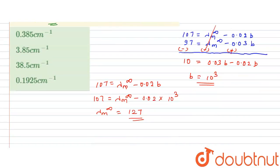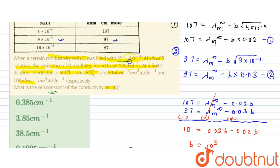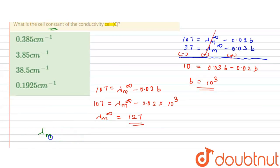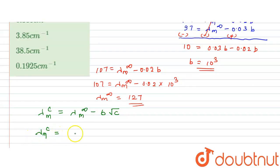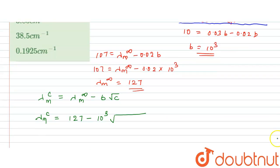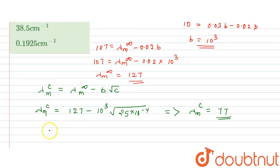Next, we calculate the cell constant. The cell was filled with 25×10⁻⁴ molar NaCl. Using λ_c = λ∞ − b√c: λ_c = 127 − 1000 × root(25×10⁻⁴). Root(25×10⁻⁴) = 0.05, so λ_c = 127 − 50 = 77. The molar conductivity at 25×10⁻⁴ molarity is 77.